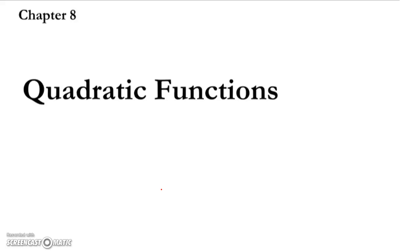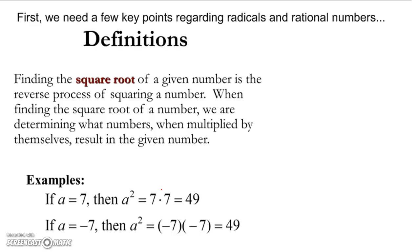Before we can get into those properly, we need to do a little bit of basics on some square root properties and the radical sign and how that works. So we'll go really quickly on this first lesson just to do some basics. The square root of a number — if you want to find the square root of a number, you're basically doing the reverse process of squaring a number.